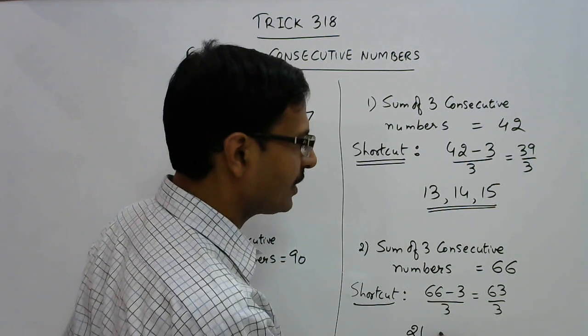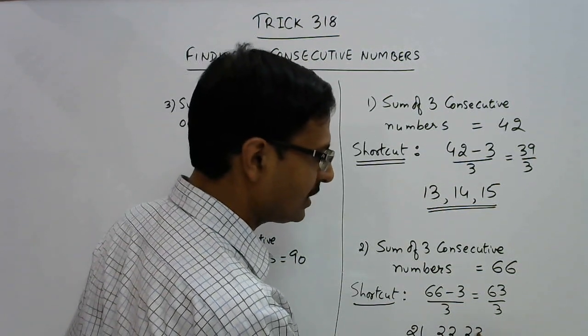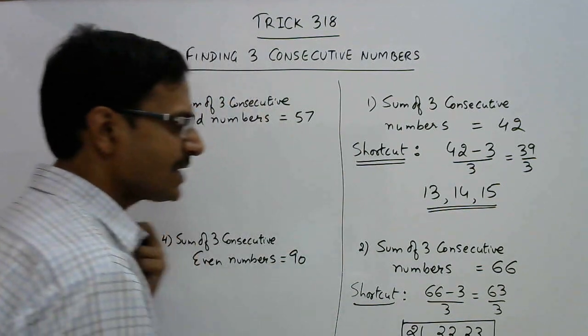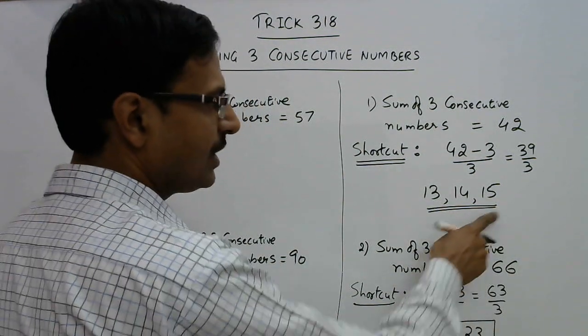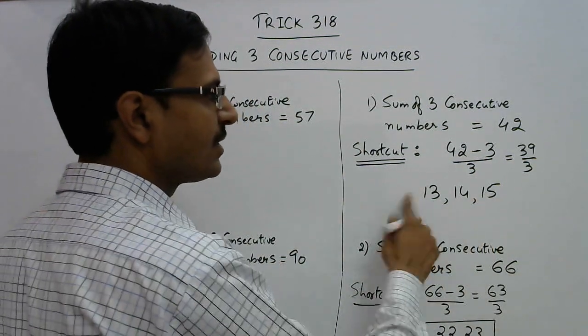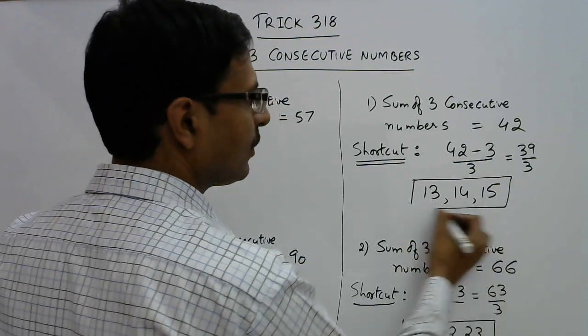The consecutive numbers are 22 and 23, which is the answer. You can check the sum is 66.